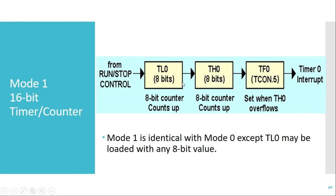Whenever both registers have value FFFFh and one more clock pulse is given, both registers roll back to 0000h and the timer 0 overflow flag TF0 is set to 1 to indicate overflow, which can be used for generating the timer 0 interrupt. The same behavior is available for timer 1, with register and flag names using 1 instead of 0.